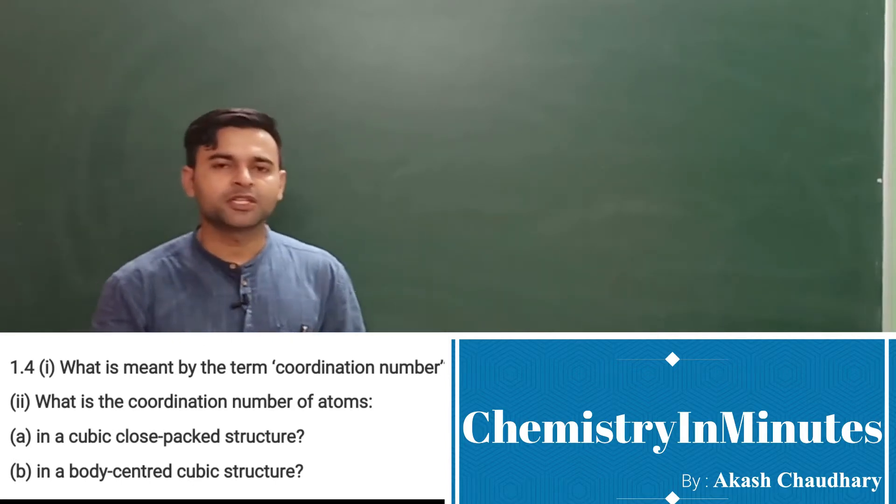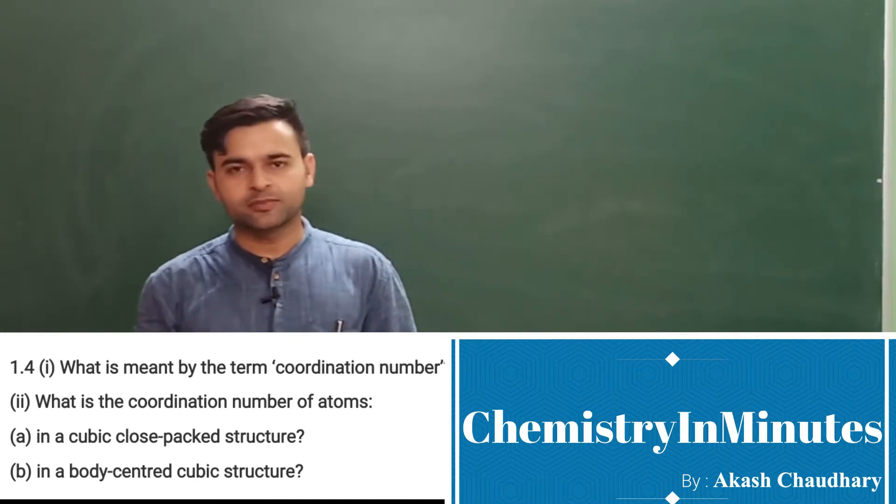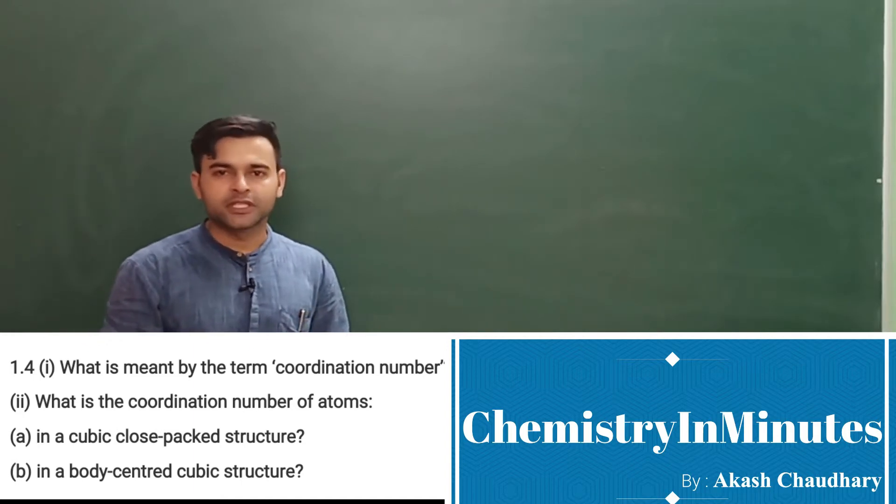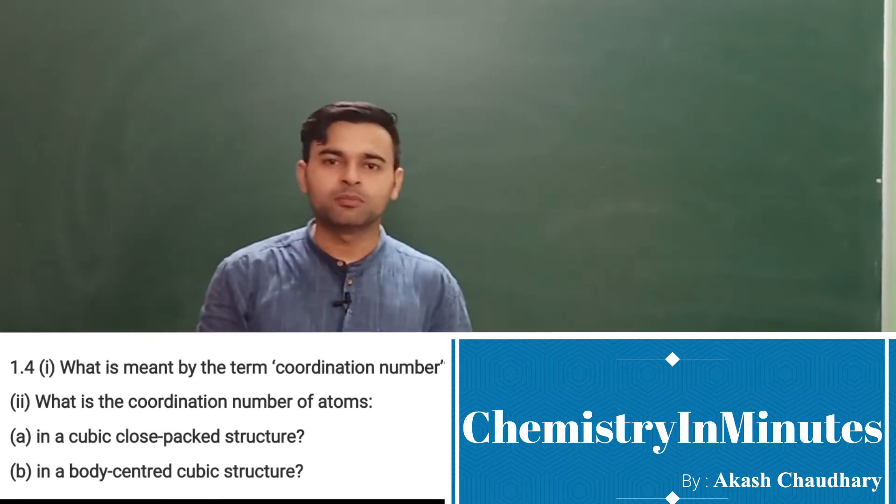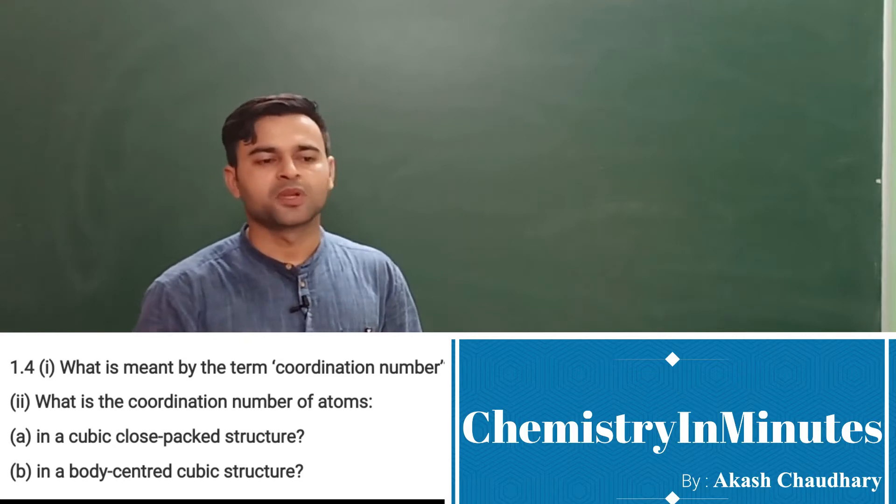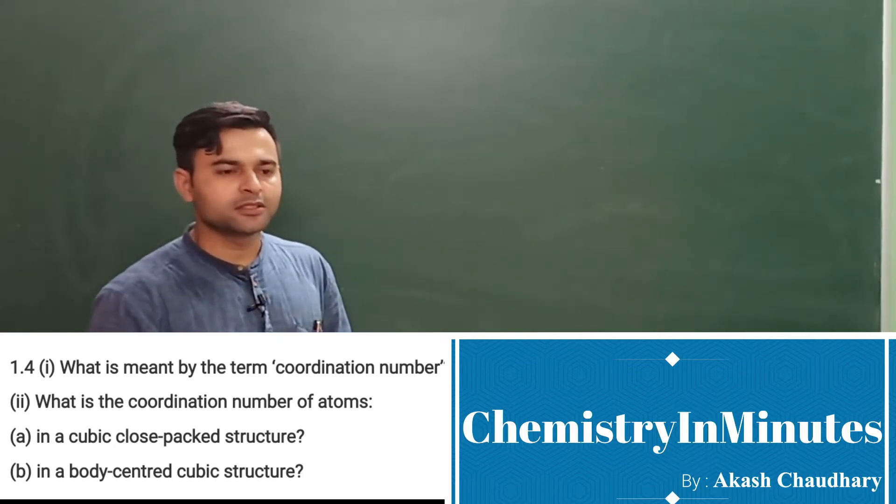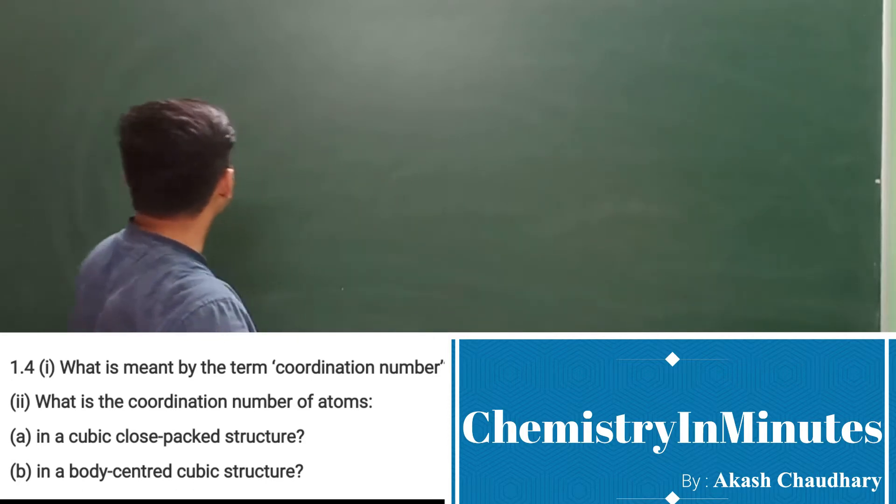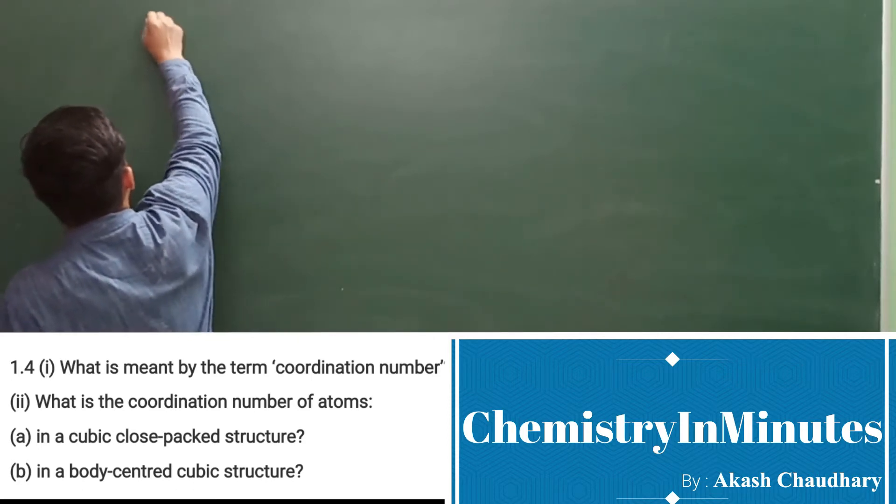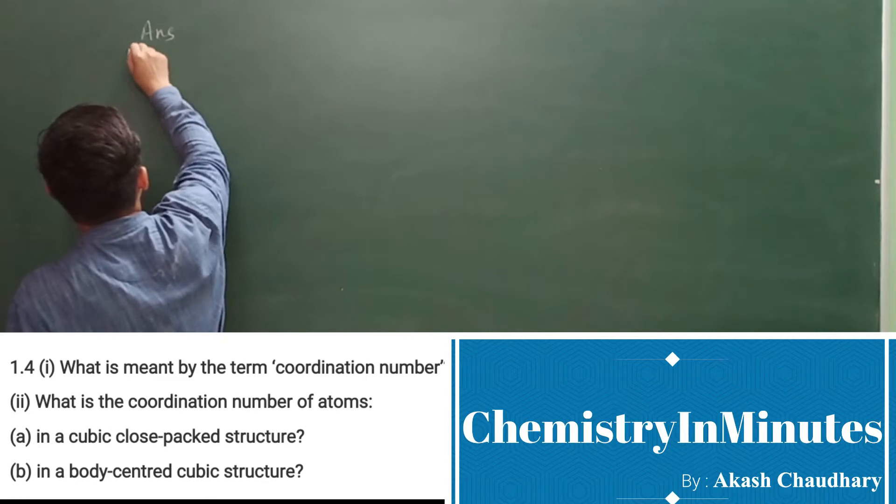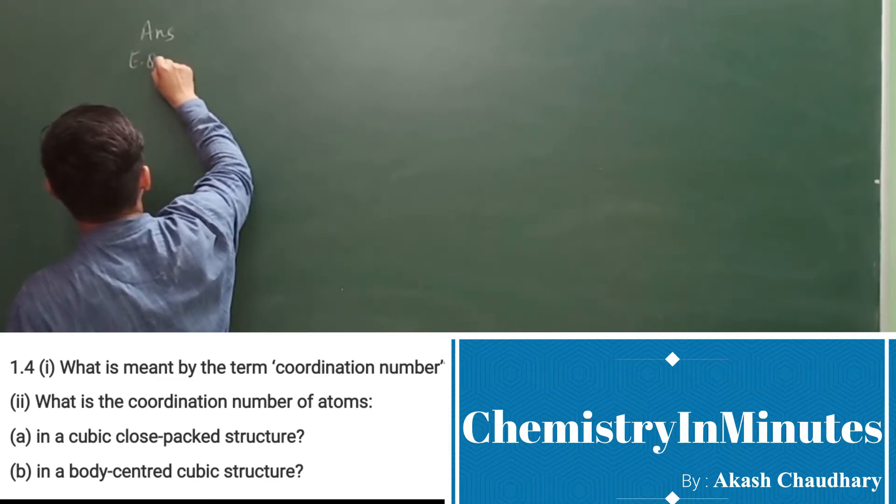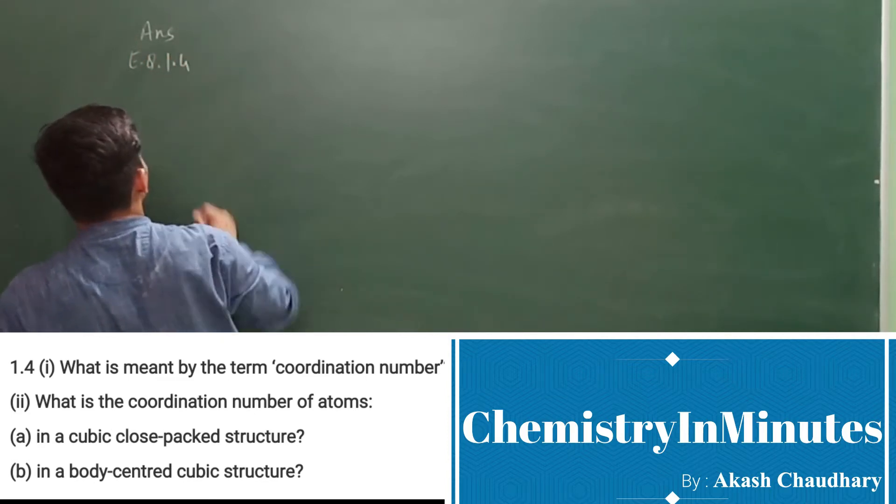So what is coordination number? In a crystal lattice, any constituent particle has a certain number of nearest neighbors - that number is called the coordination number. And we'll answer the second parts as well. So let's write the answer to exercise question 1.4.